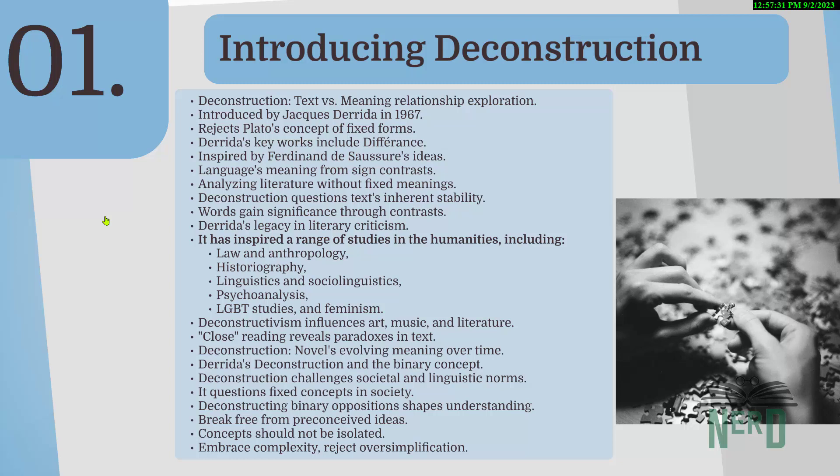This whole deconstruction thing was brought into the spotlight by a clever guy named Jacques Derrida in his book Of Grammatology in 1967. He basically said, let's forget about the idea of perfect, unchanging meanings and get into the nitty gritty of how language actually works. Derrida was super into the idea that language is all about signs and words, and he suggests that they only make sense because they are different from each other — like we understand 'hot' because we know it's not 'cold.' That's what he meant by difference or contrast between signs.